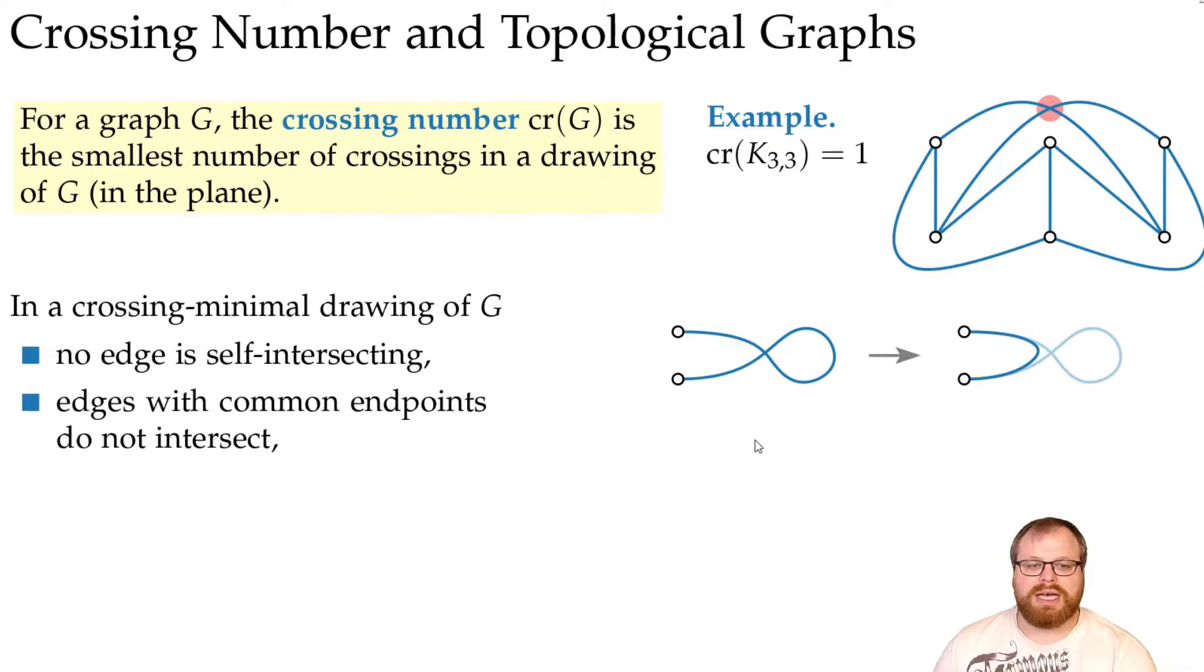Also, edges that have a common endpoint cannot intersect. Of course, if we look at this situation, again we can do some local rerouting. We take the green edge and follow the blue here, and then go up. And the blue follows the green here, and then goes down. The number of crossings between the blue and the green goes down by one.